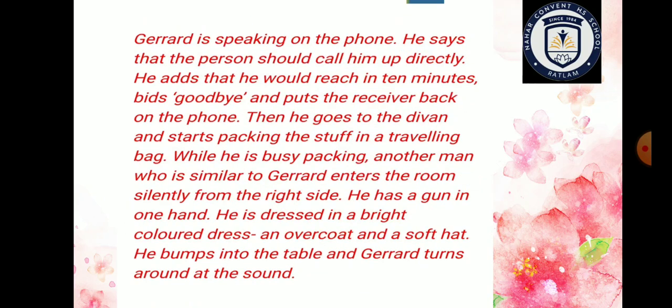Gerard is speaking on the phone. He says that the person should call him up directly and he adds that he would reach in 10 minutes — woh unse keh rahe the ki main 10 minutes mein aa kar mil raha hoon. He says goodbye and puts the receiver back on the phone. Then he goes to the divan and starts packing his stuff in a traveling bag. While he is busy packing, another man who is similar in appearance to Gerard enters the room silently from the right side door. He has a gun in one hand and is dressed in a brightly colored dress, overcoat, and a soft hat. He bumps into the table and Gerard turns around at the sound and notices him.